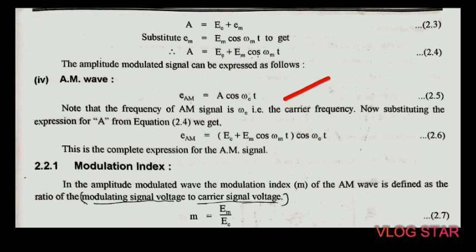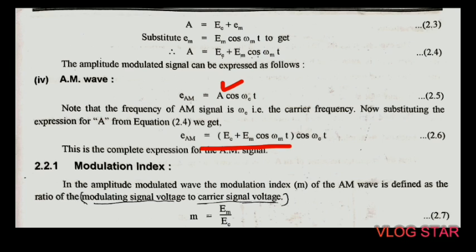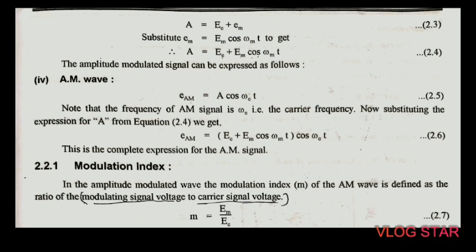The AM wave is e_AM = A cos(ω_c t). Note that the frequency of the AM signal is ω_c, the carrier frequency. Substituting the expression for A, which is E_c + E_m cos(ω_m t), into this equation, we get: e_AM = (E_c + E_m cos(ω_m t)) cos(ω_c t). This is the complete expression for the AM wave — a combination of the carrier and modulating signals, also called the modulated signal.